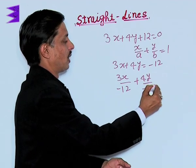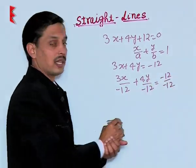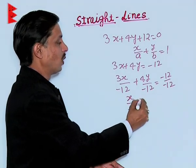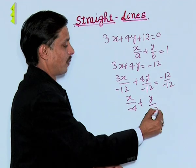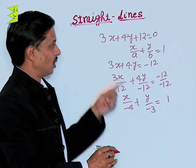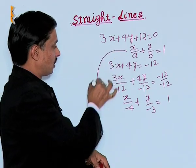This becomes minus 12 upon minus 12. So this becomes x upon minus 4 plus y upon minus 3 equals 1. If I compare the formula with this,